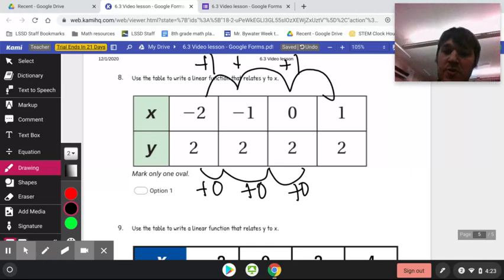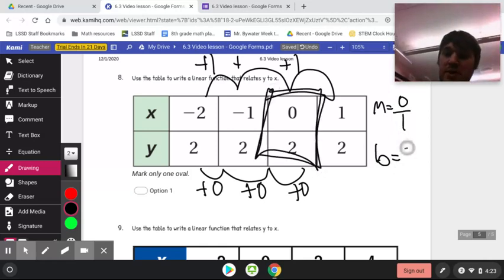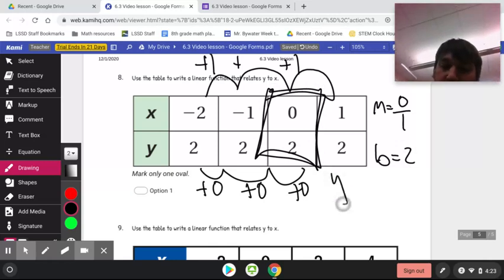So my slope would be up 0 over 1. My y-intercept is 2, because it's right here. When x is 0, my y-intercept is 2.